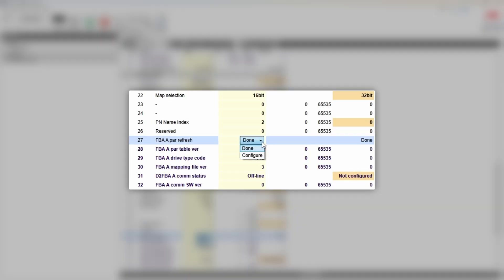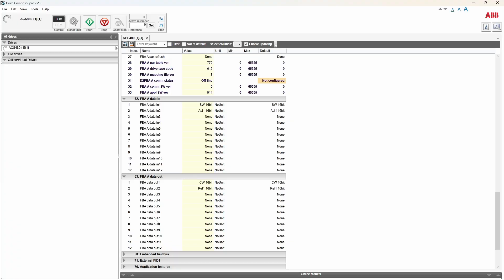To make the drive take the changed parameters into account, you can either power cycle it or flip parameter 27 refresh.